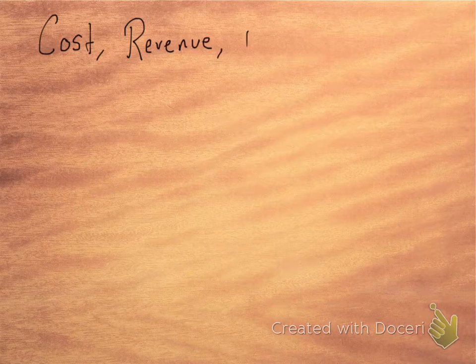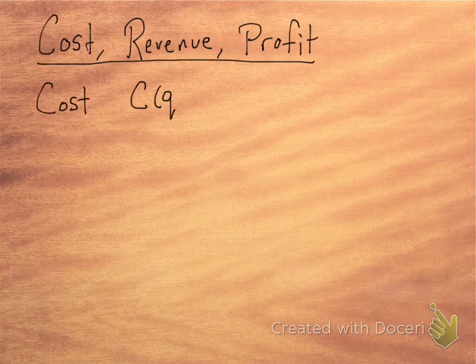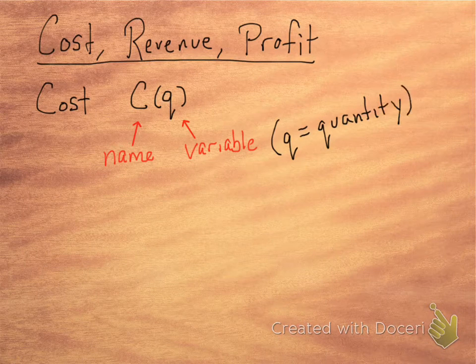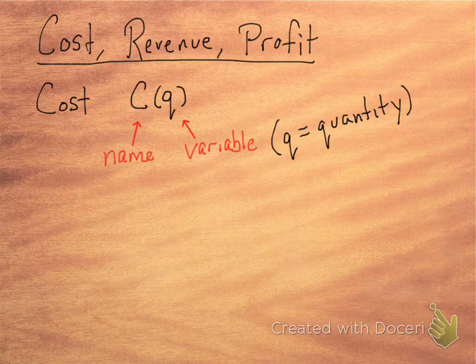Alright, we've got a little bit of cost, revenue, and profit action for you today. So if you remember that cost function, it is called C of Q, where C is the name for cost and the variable Q stands for quantity.